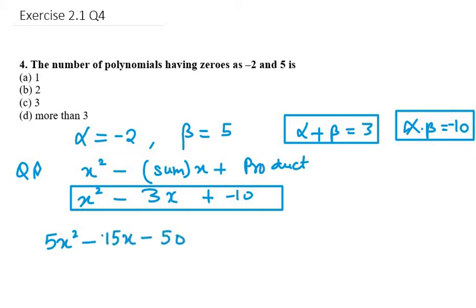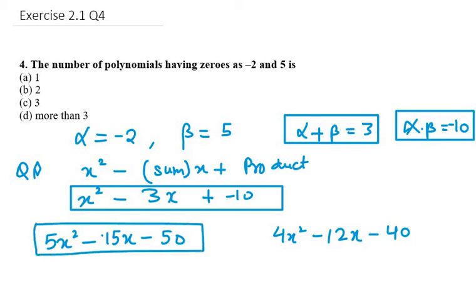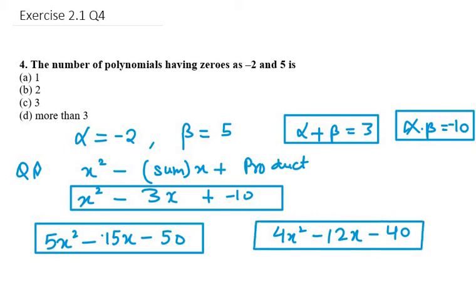And if I multiply it with 4, it will be 4x² - 12x - 40. So we have these two polynomials when we multiply it with 5 and 4 respectively. Now you can see that we can have infinite number of polynomials out of this, because if I multiply it with any number I will get a new polynomial.